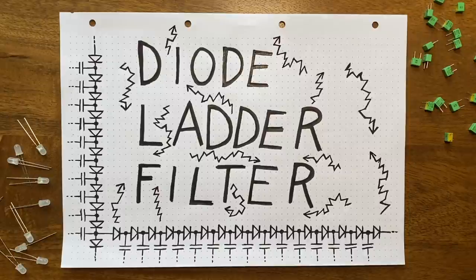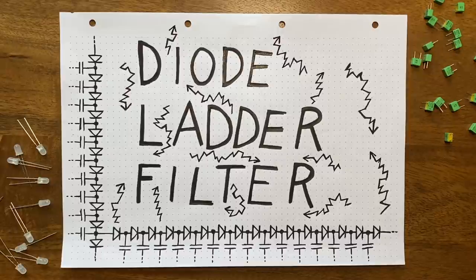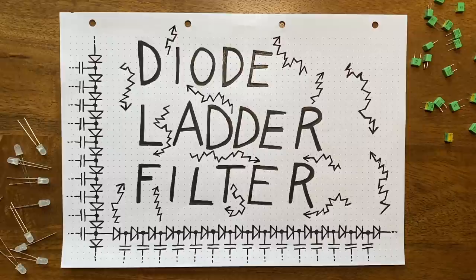In this video, I'll walk you through the process of designing a diode ladder filter from scratch. This type of filter is quite similar to a classic Moog transistor VCF, but implements voltage control using a string of diodes instead.